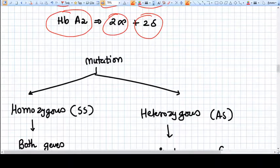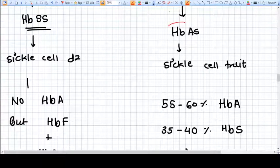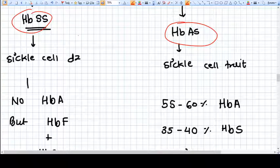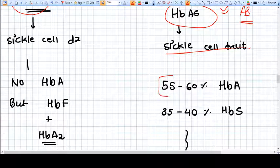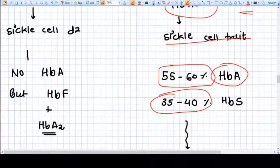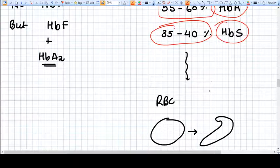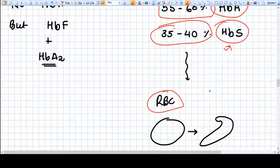If some person is a carrier or AS, then it is called sickle cell trait. And if we see in them, 55 to 60 percent of hemoglobin is HbA, that is normal hemoglobin, but 35 to 40 percent is HbS, and that is defective hemoglobin. So the RBC, because of the properties of this hemoglobin, are not well. The RBC of this kind of person change into a sickle cell shape because of the properties of HbS.